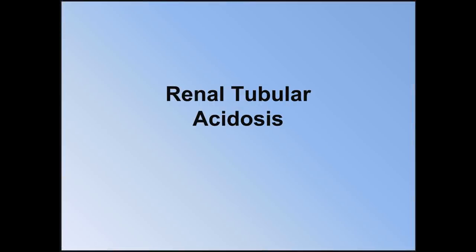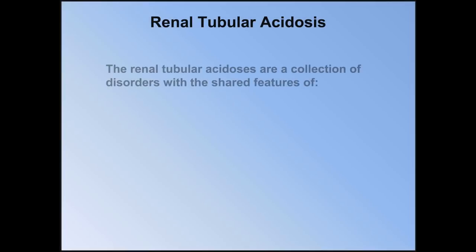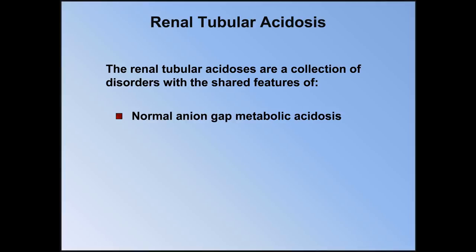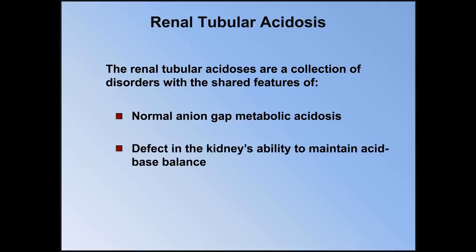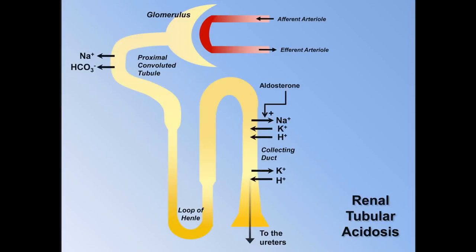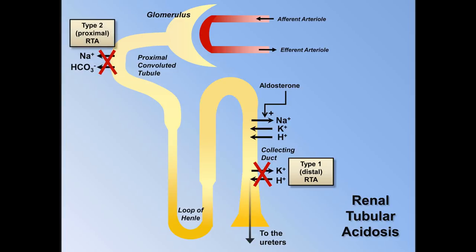The first group of etiologies to discuss is the renal tubular acidoses. These are a collection of disorders with the shared features of a normal anion gap metabolic acidosis, a defect in the kidneys' ability to maintain acid-base balance, and the absence of overt renal failure. Here is a schematic of a nephron from the kidney. The three major mechanisms of acid-base regulation in the nephron are shown, and each is linked to one type of RTA. Type 1 RTA, also known as distal RTA, is caused by a defect in the collecting duct where hydrogen ions are normally excreted with simultaneous reabsorption of potassium.